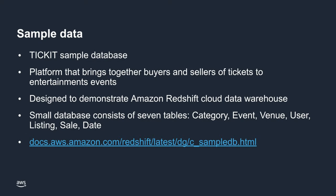For this demonstration, I will be using the Ticket Sample Database. The Ticket Sample Database simulates a platform that brings together buyers and sellers of tickets to entertainment events. It was designed to demonstrate Amazon Redshift, AWS's cloud data warehouse. It's a small database consisting of a single schema with seven tables: category, event, venue, user, listing, sale, and date.